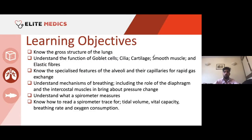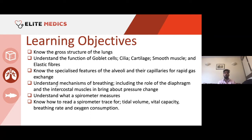Let's now have a look at the gross structure of the lungs — the anatomy. We're looking at the function of certain components of the respiratory tree, the specialized features of alveoli and their capillaries for rapid gas exchange. We'll come back to the whole idea of surface area to volume ratio and the fixed rule of diffusion. We'll then understand the mechanisms of breathing, the role of the diaphragm and intercostal muscles to bring about pressure changes, causing inspiration and expiration of air.